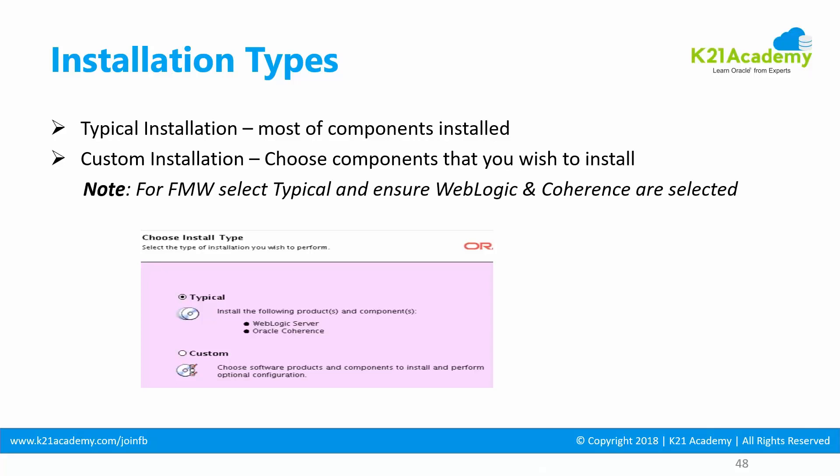If you're doing a Fusion Middleware installation — such as SOA, OBIE, WebCenter, Access Manager, Identity Manager, and so on — you typically need to select WebLogic with Coherence. WebLogic comes either as standalone WebLogic or WebLogic with Coherence. Make sure you select WebLogic with Coherence. Coherence is a data tier layer which lets you leverage data pulled from the database and store it on the application tier under the Coherence layer.